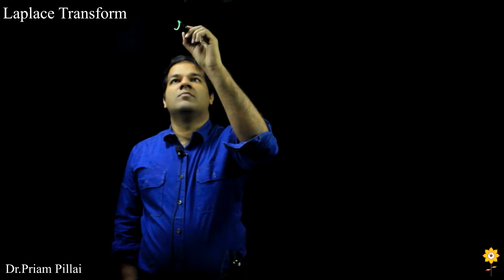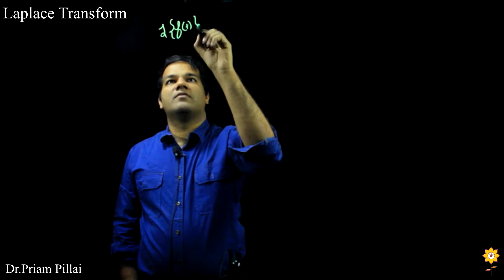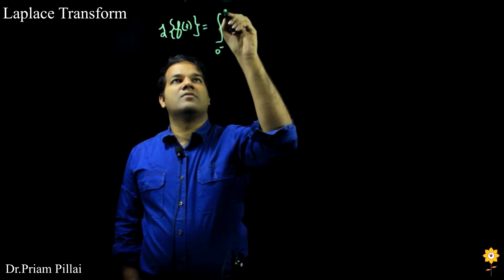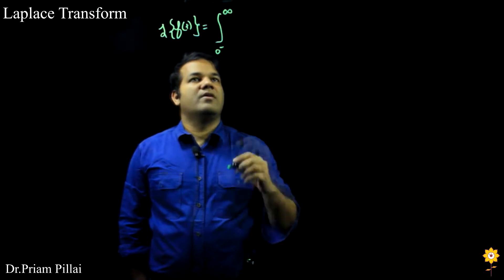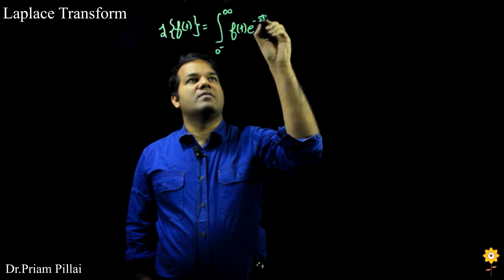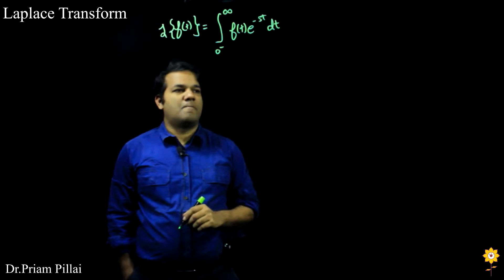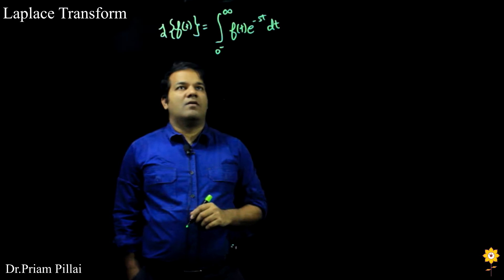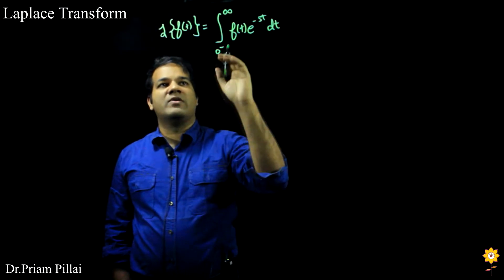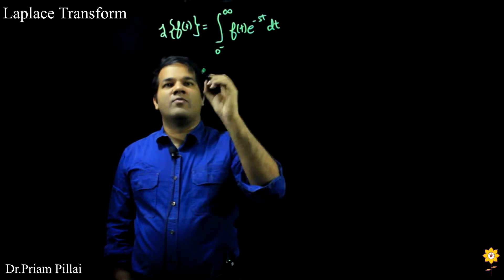The definition of a Laplace transform is that the Laplace transform of some function f of t is given by the integral from 0 minus to infinity of f of t times e to the minus st dt. This is a one-sided Laplace transform, so it only goes from 0 to infinity and it includes the 0 point — that's why we go from 0 minus.